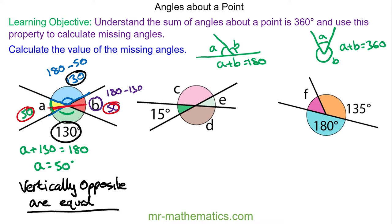We can work out angle a using vertically opposite angles, so it will be equal to the 15 degree green angle. And we can work out angle d because it lies along the same straight line as angle e, so that would be 180 take away 15, which is 165. And this is vertically opposite to angle c, so that will be the same.